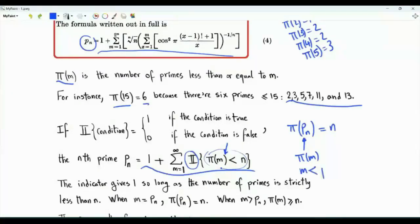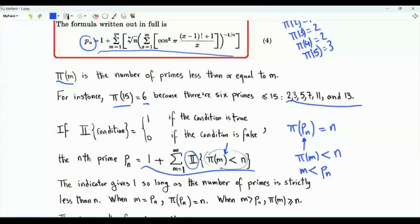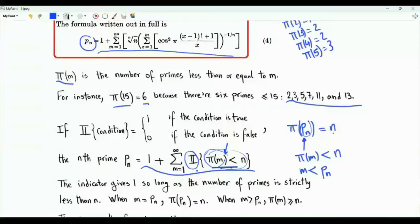π(m) where m is strictly less than p_n is strictly less than n, because we haven't yet reached the nth prime. So this is the idea of the summation: the indicator function is 1 so long as m equals 1, 2, 3, all the way to p_n minus 1. When m equals p_n, the number of primes becomes n, the condition in the indicator is false, the indicator is 0, and after that it remains 0. This summation is exactly equal to the nth prime minus 1.